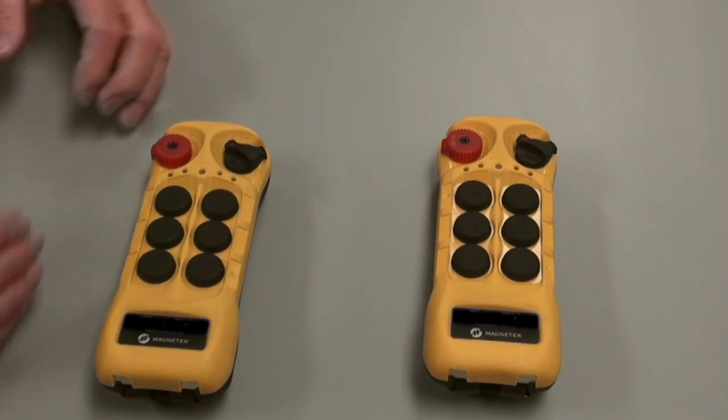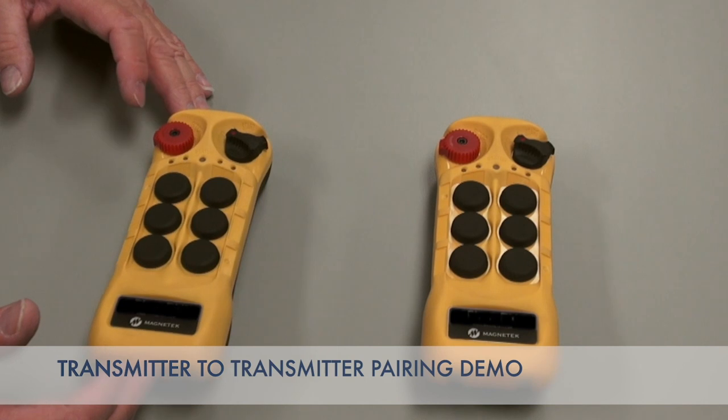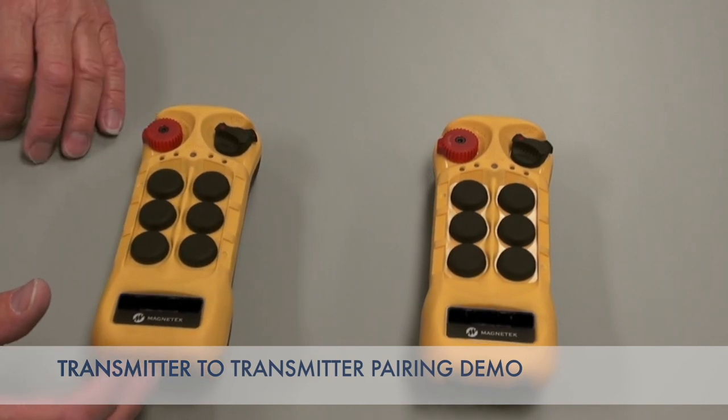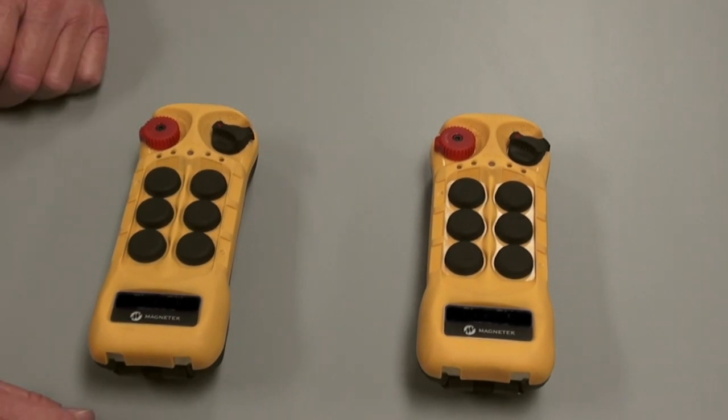We are going to demonstrate the pairing function between two transmitters. Transmitters must be identical for this to happen. In other words, they both have to be, in this case, a 6-button transmitter.